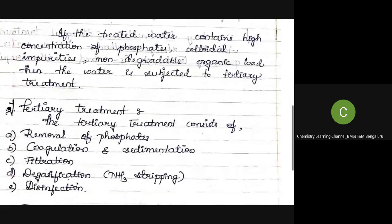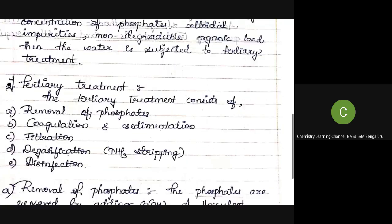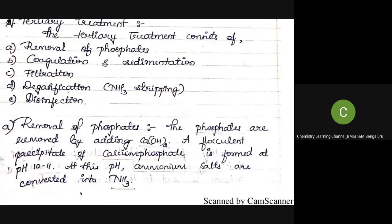In tertiary treatment, phosphates are removed, any fine particles still present are removed by coagulation and sedimentation, normal filtration is performed, and gases like ammonia or carbon dioxide are removed by degasification. Finally, the water is disinfected to kill any remaining bacteria. After tertiary treatment, the water has very low BOD and phosphate content — it is ultra-pure and equivalent to drinking water.